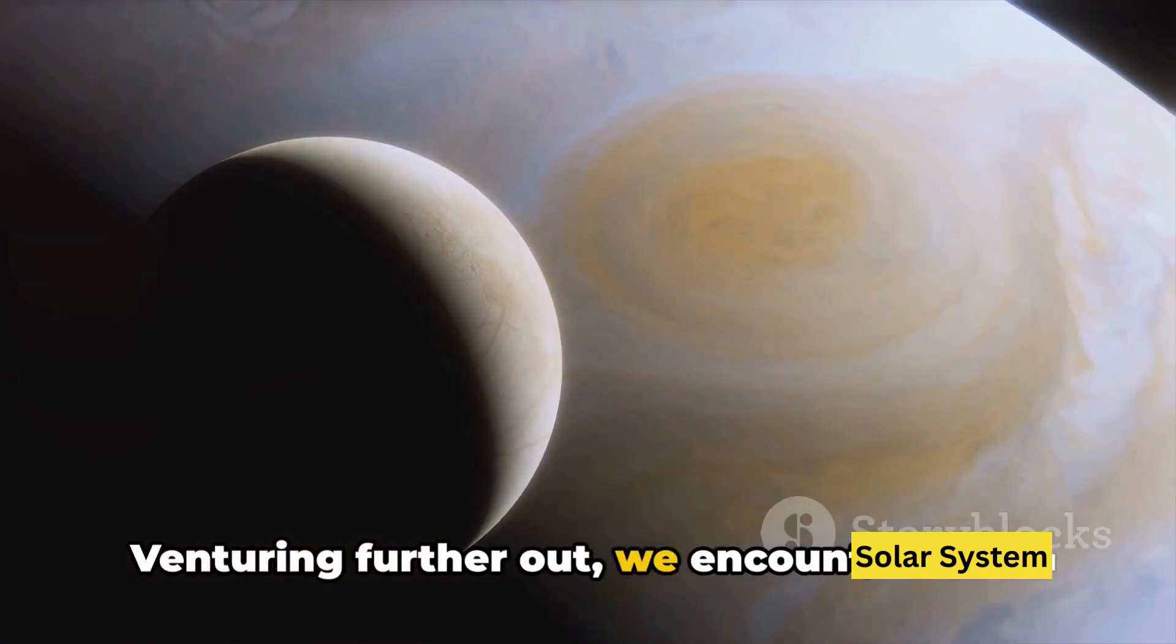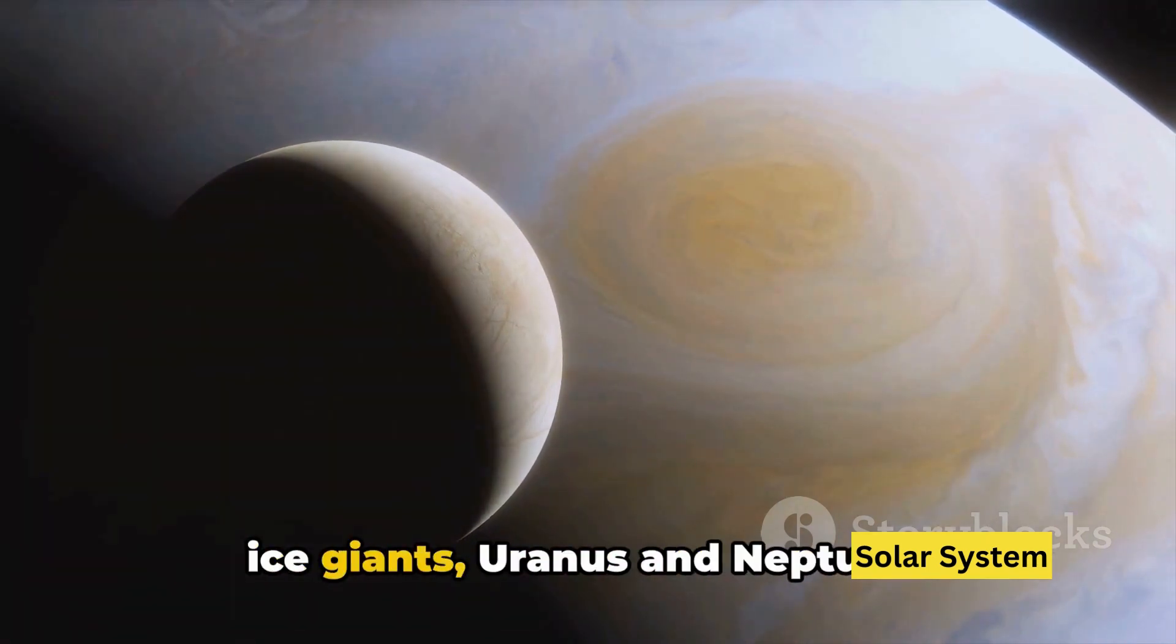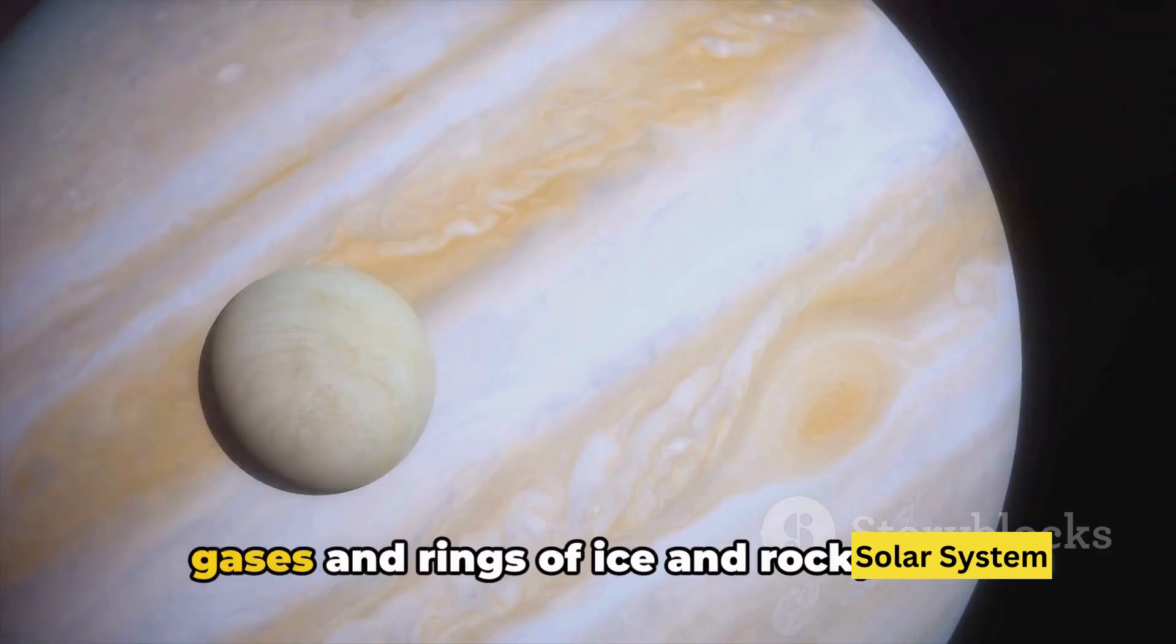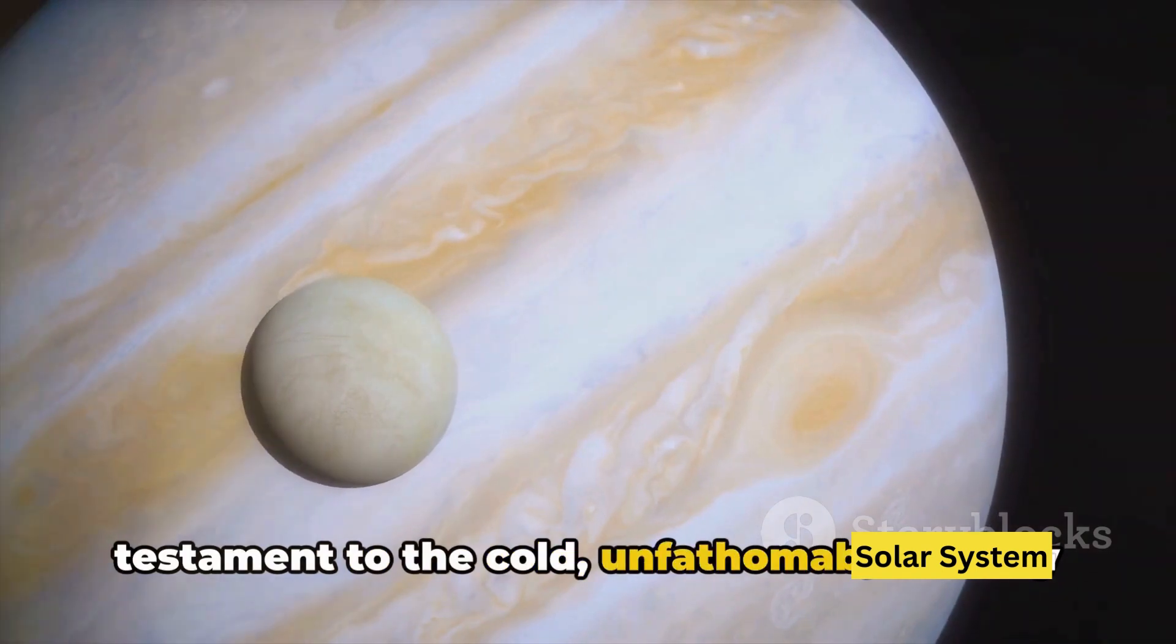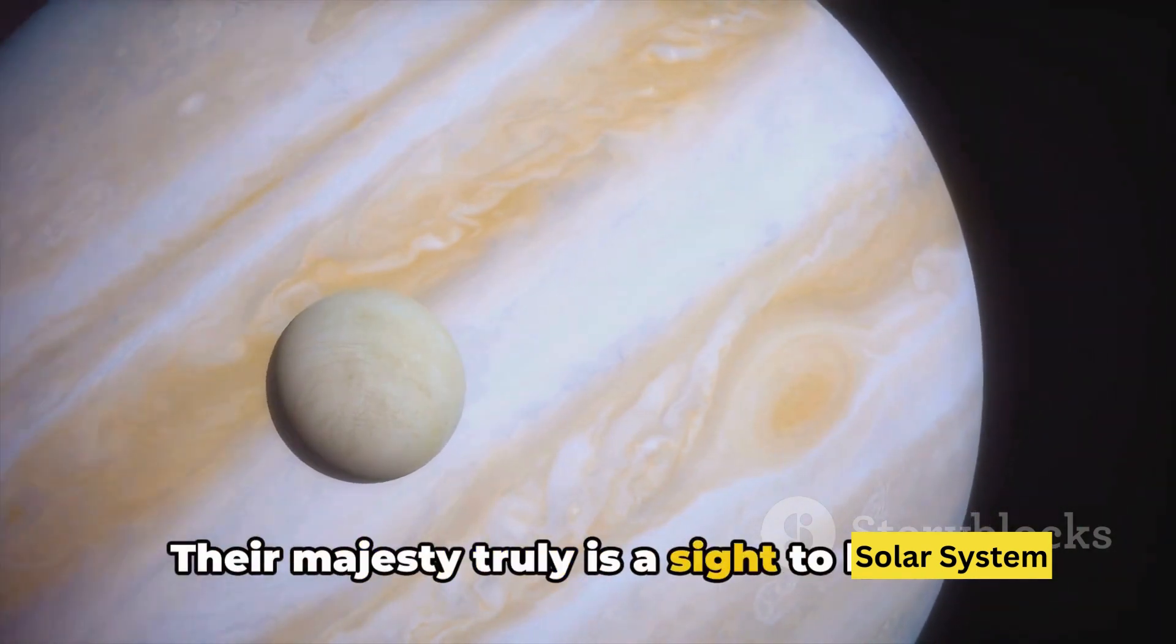Venturing further out, we encountered the gas giants, Jupiter and Saturn, and the ice giants, Uranus and Neptune. These outer planets with their swirling gases and rings of ice and rock, are a testament to the cold, unfathomable beauty of the outer solar system. Their majesty truly is a sight to behold.